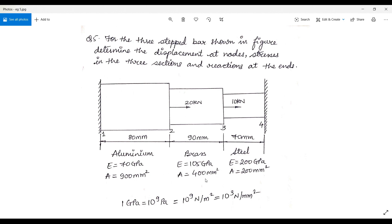For the third step bar, the length is 70 mm. Material is steel. Young's modulus is given as 200 GPa and area is given as 200 mm².